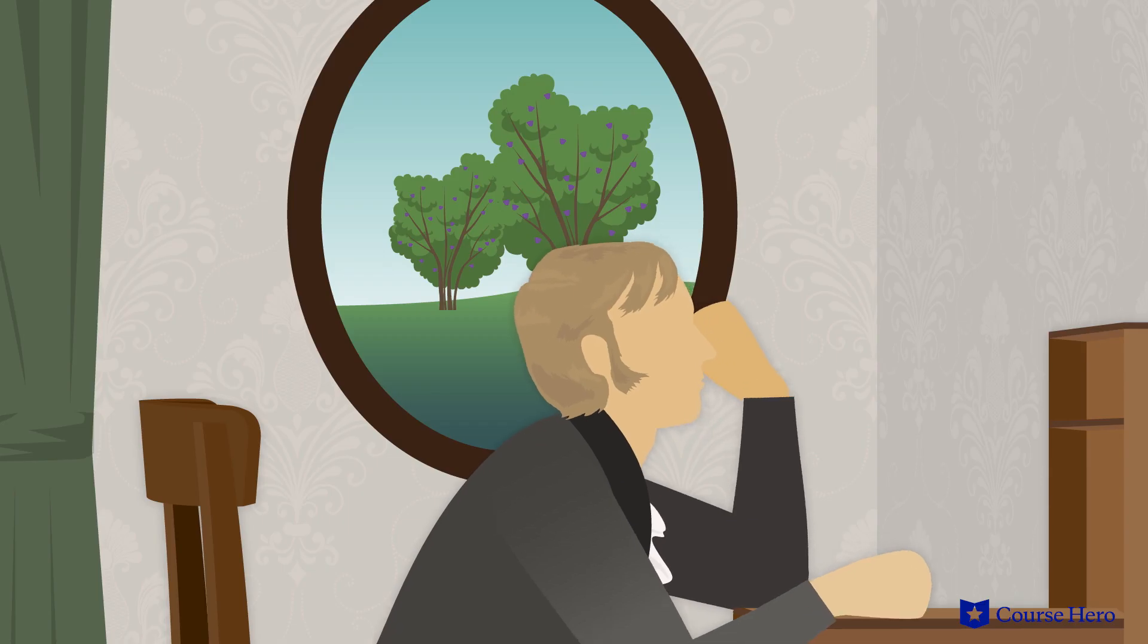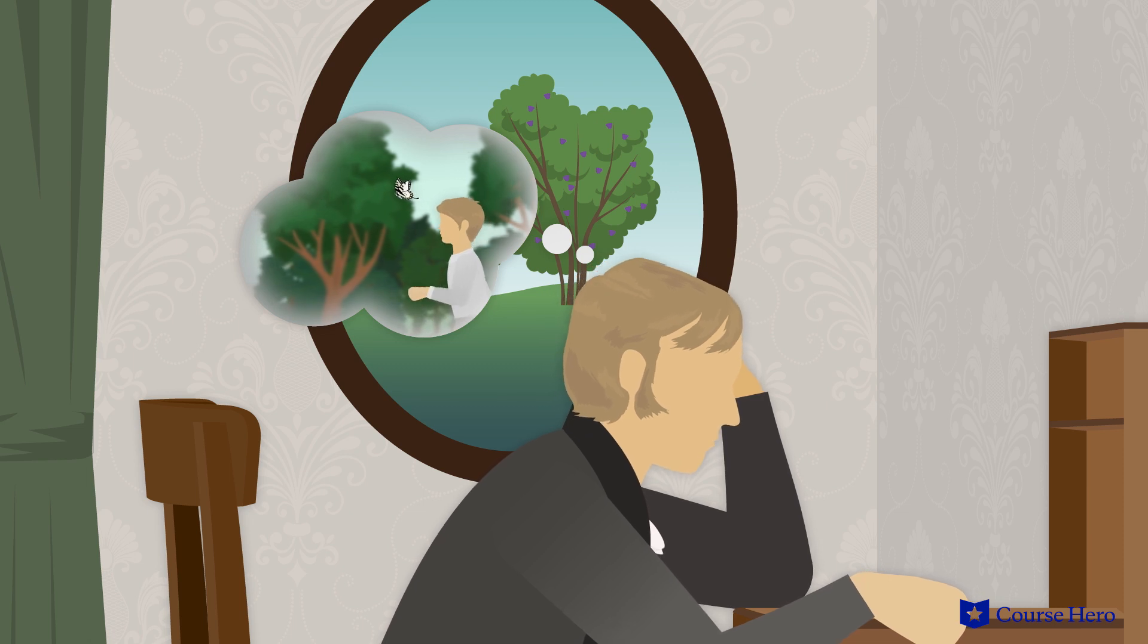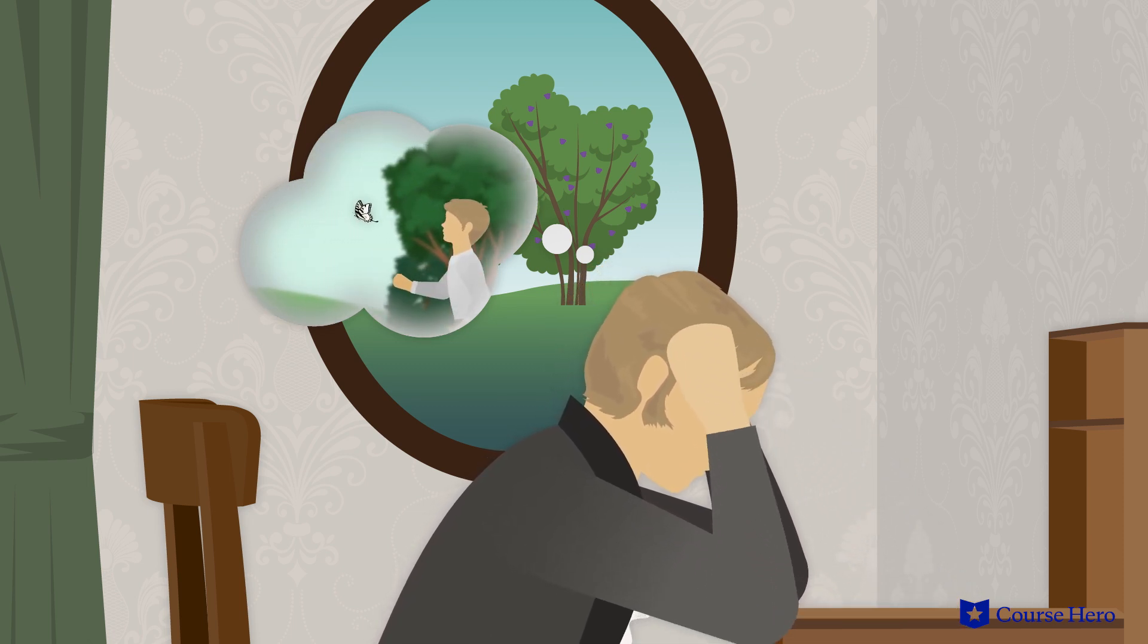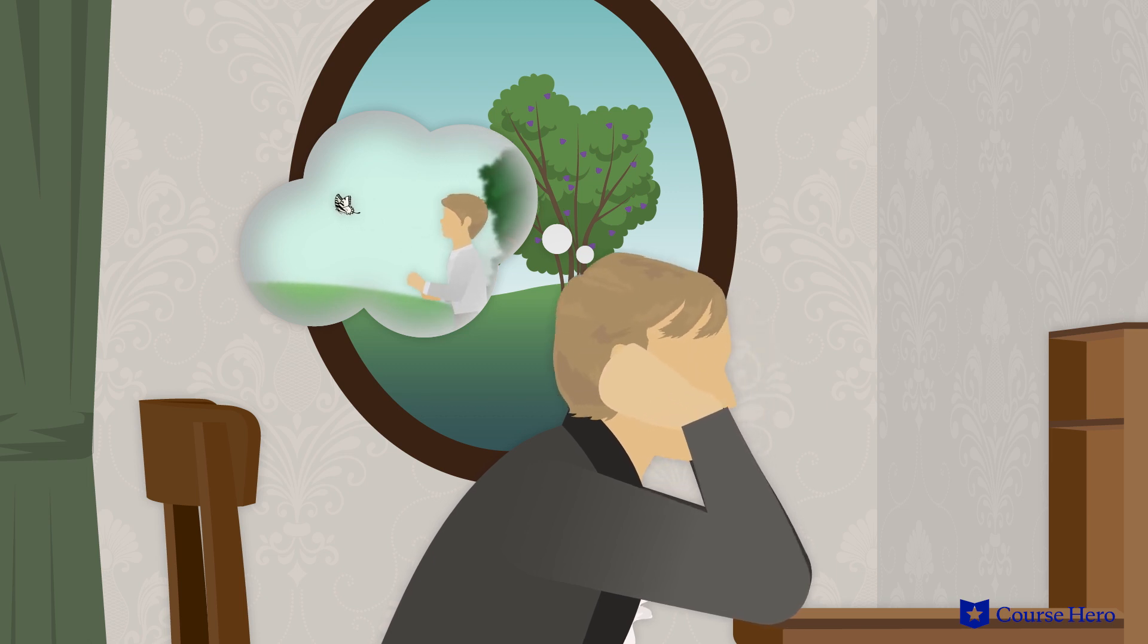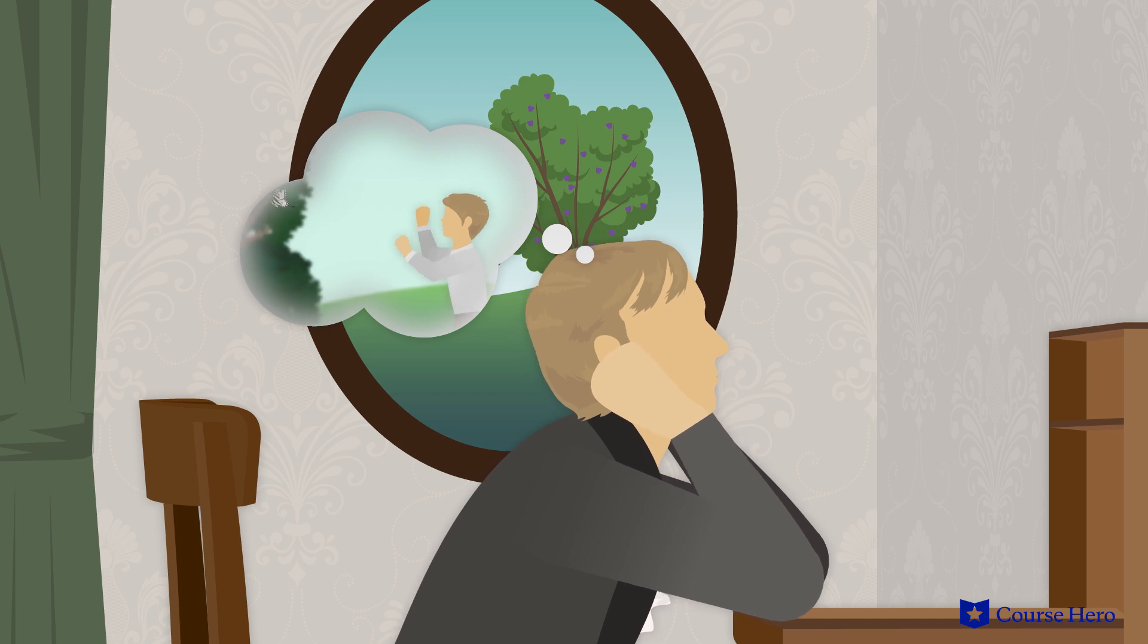The first stanzas of the Ode recall happier times when as a child everything seemed sunny and hopeful, but which are now much darker for the poet, who misses the undiluted optimism of childhood when a dissipation of pleasure in life seemed unimaginable.